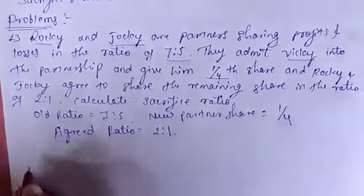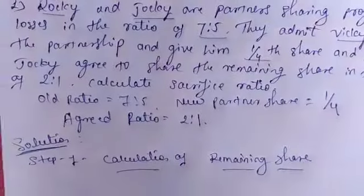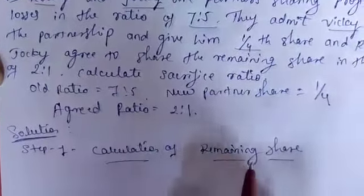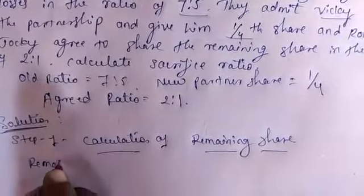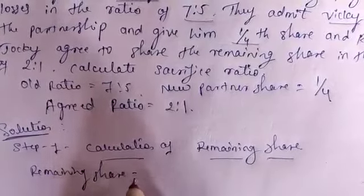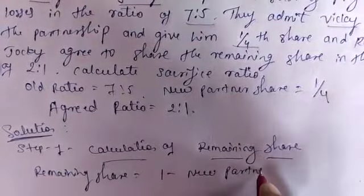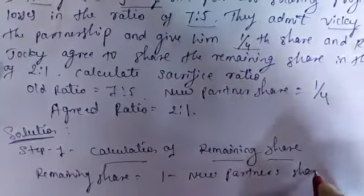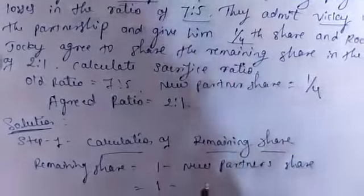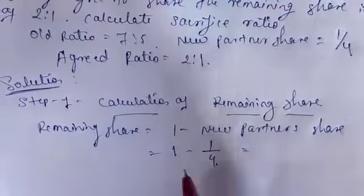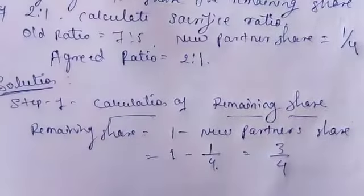Solution, Step 1: Calculation of remaining share. Remaining share equals 1 minus new partner share. So, 1 minus 1/4th. The simplification of this is 3 divided by 4. This is the remaining share.